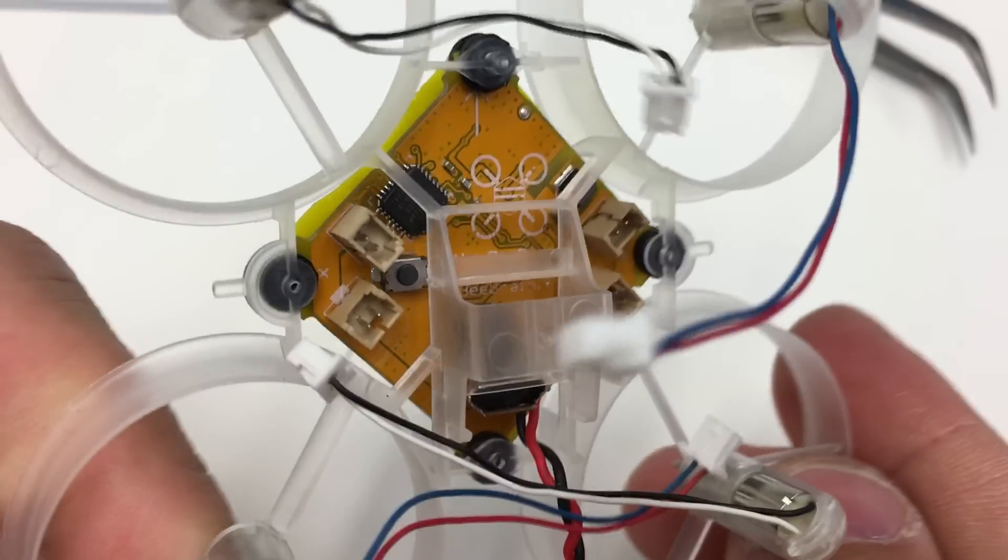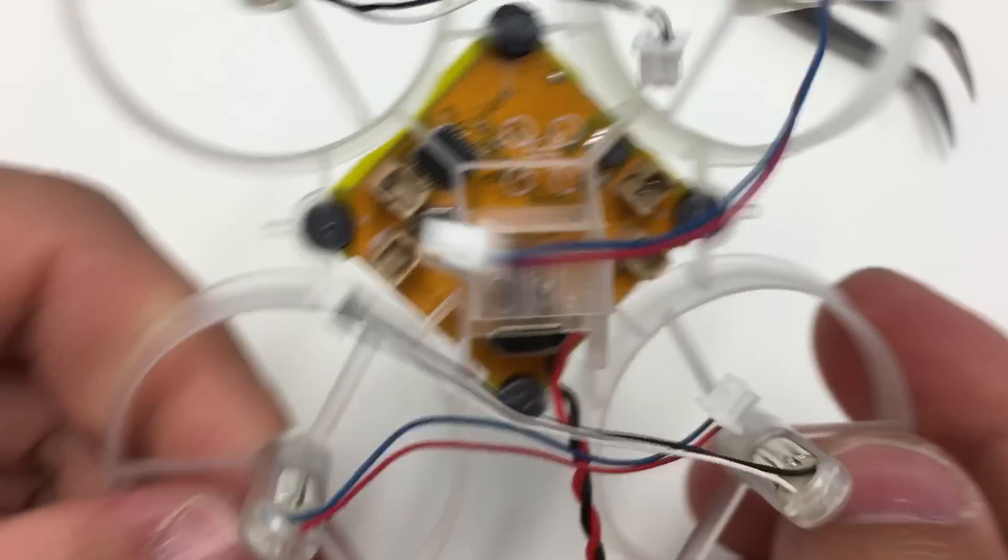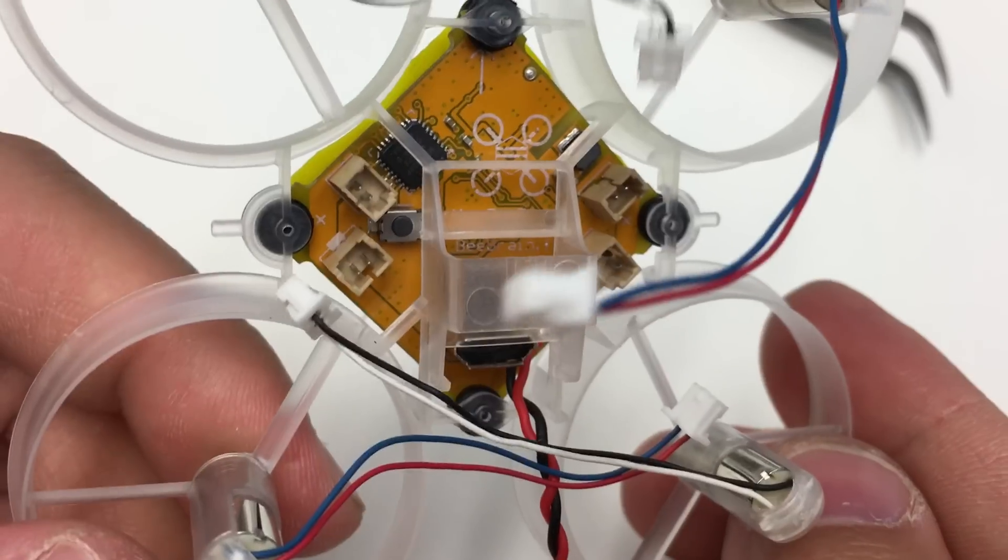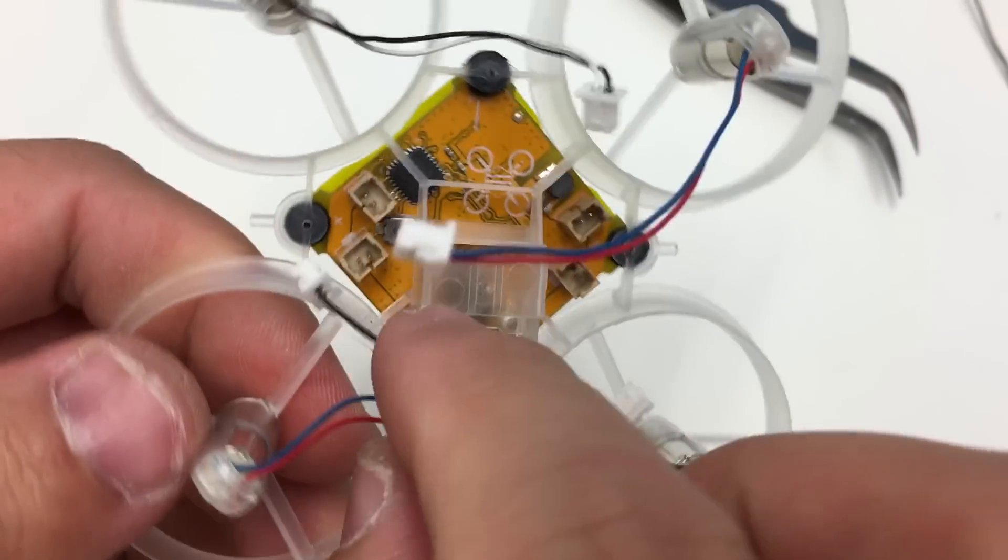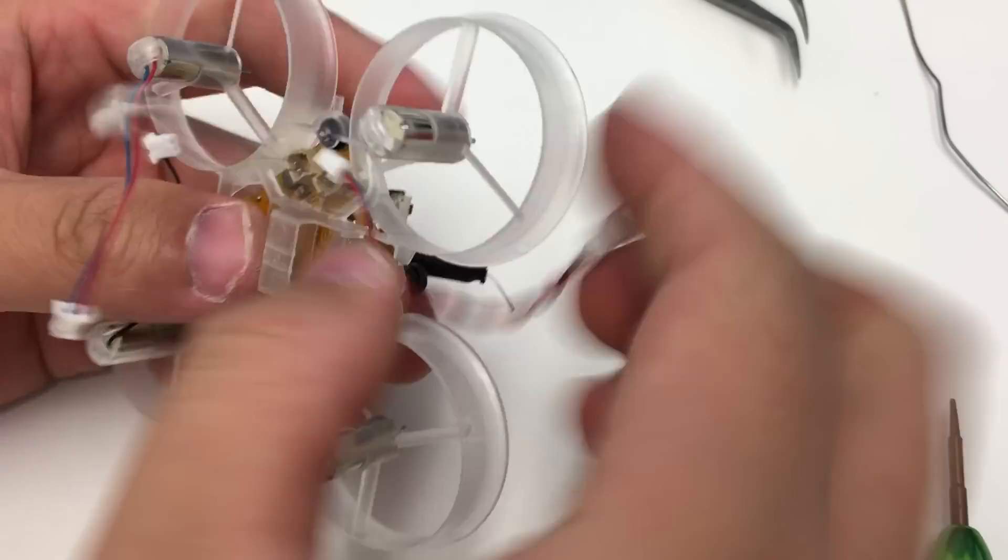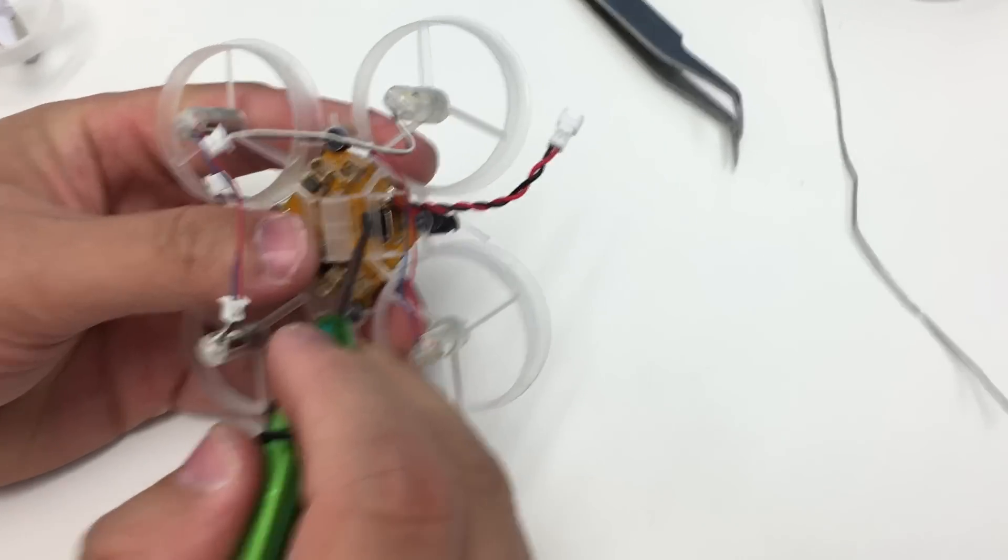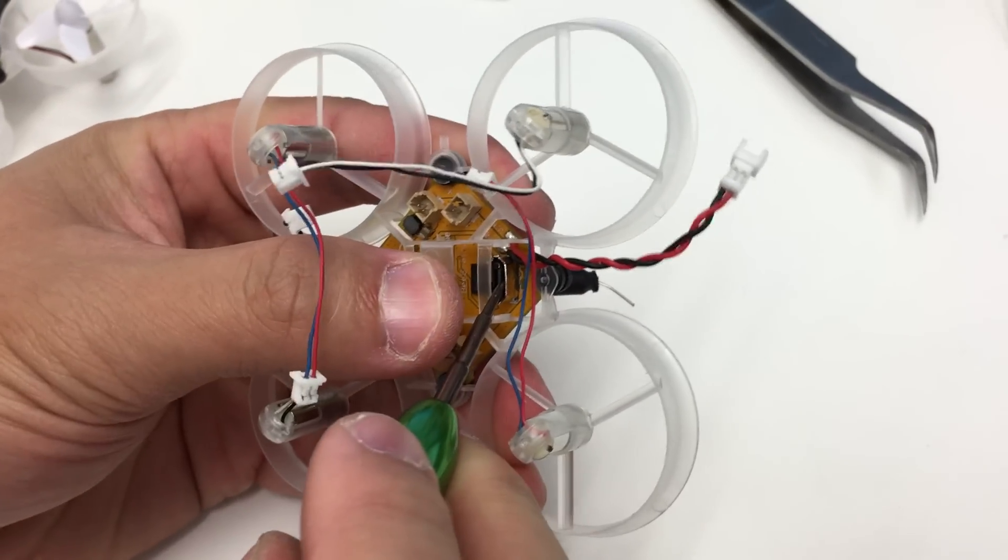Now we'll flip it over so you can see why we modded that area. The bind button for the FrSky compatible version is right there. We put it on the bottom so you won't accidentally hit it or have any issues while you're flying. You're just going to take it and bind it as you would with any other flight controller. We can make a video on that if needed.